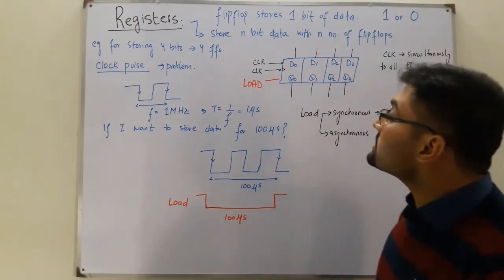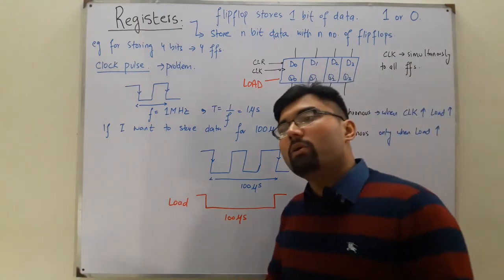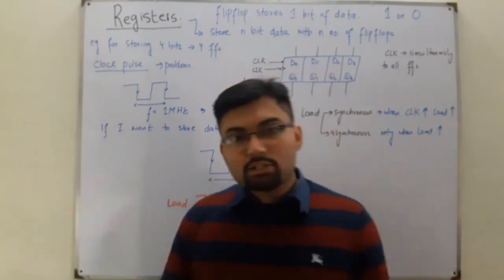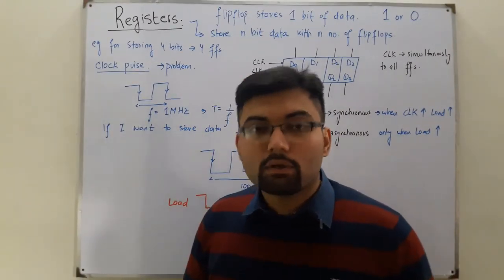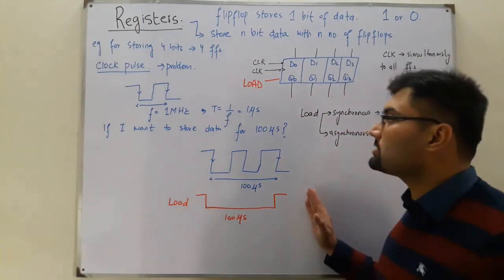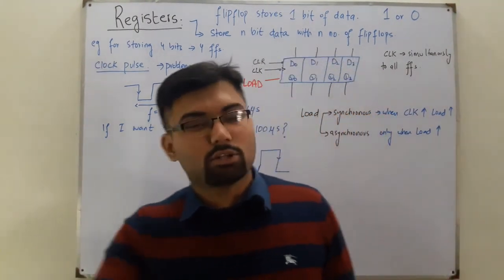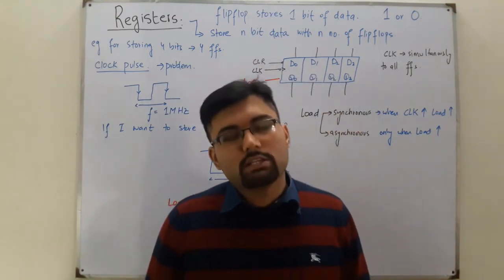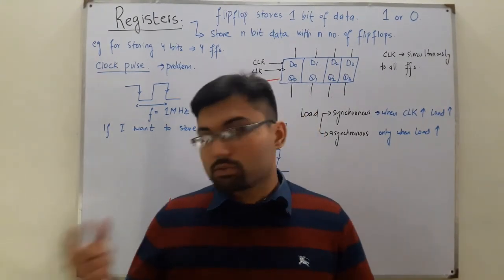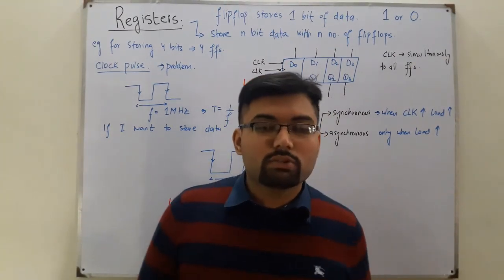So that's the introduction to registers. A flip-flop is used to store a single bit of data. When we want to store multiple bits, we combine a number of flip-flops into a group; this group can store multiple bits and is called a register. See you in the next lecture where we cover the classification of registers — it will also be a short video. Registers are an easy concept if you know flip-flops and counters well. Take care, goodbye.